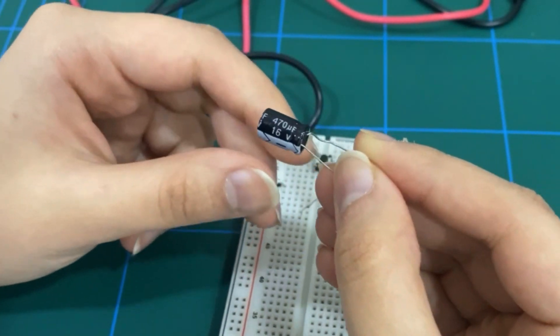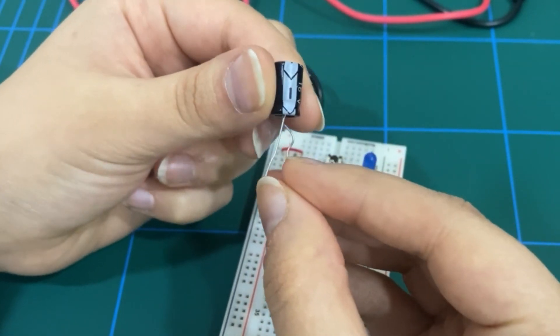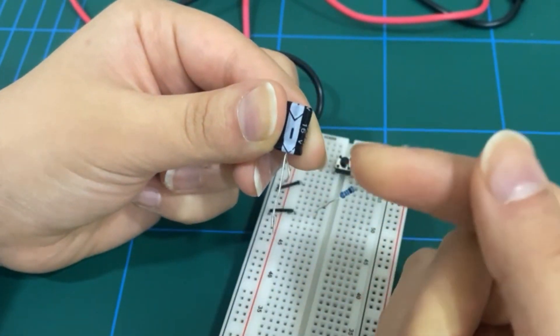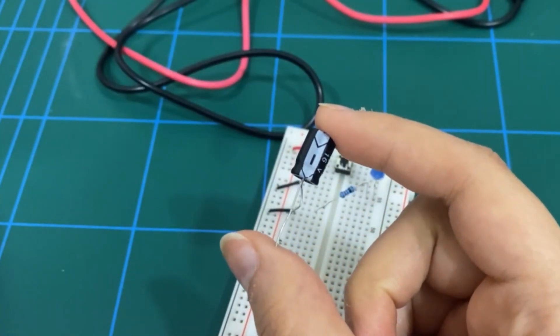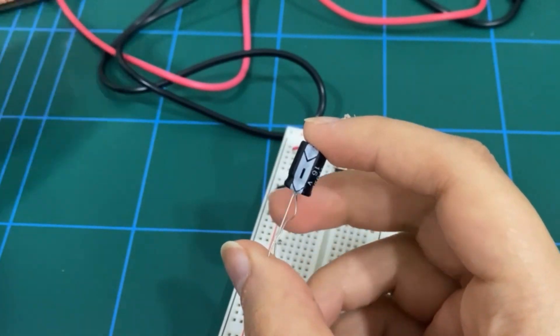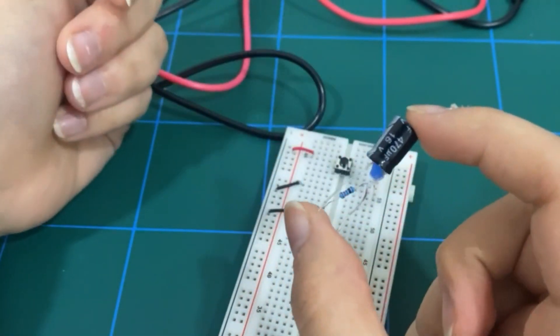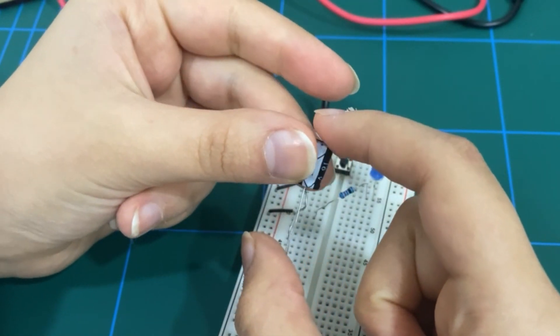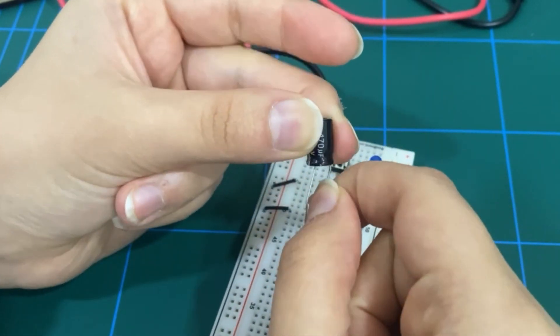Okay. And as you can see, we have one end of the capacitor denoted as negative through this denotation. And because this is an electrolytic capacitor, you will find that it's polarized.